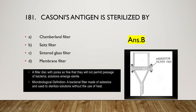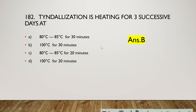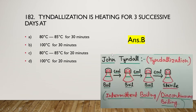Here we can see the Seitz filter instrument with the asbestos filter pad present. Moving on: tyndallization is heating for three successive days at 80–85°C for 30 minutes, 100°C for 30 minutes, 80–85°C for 20 minutes, or 100°C for 20 minutes? The right answer is option B, 100°C for 30 minutes. This tyndallization process was developed by John Tyndall.